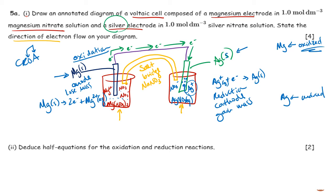For the salt bridge: because we are consuming silver ions at the cathode, sodium ions from the salt bridge will flow down to replace them and balance the charge. On the other side, nitrate ions will flow in to balance out the extra magnesium ions appearing in solution. This completes our annotated diagram of a voltaic cell.